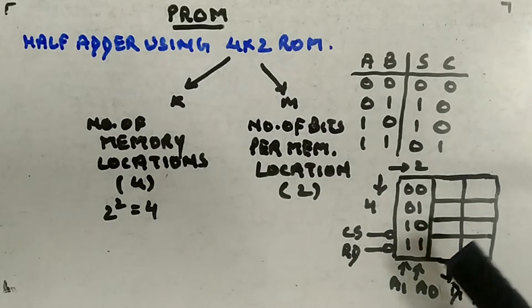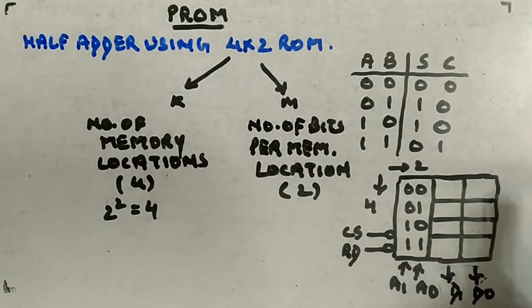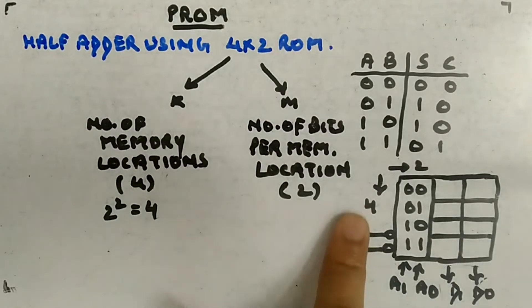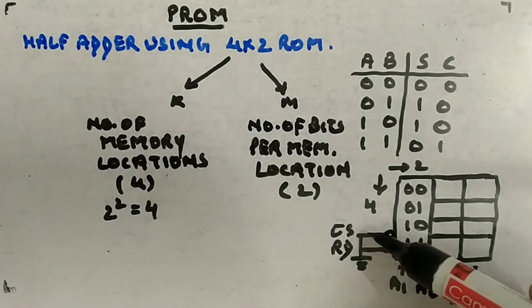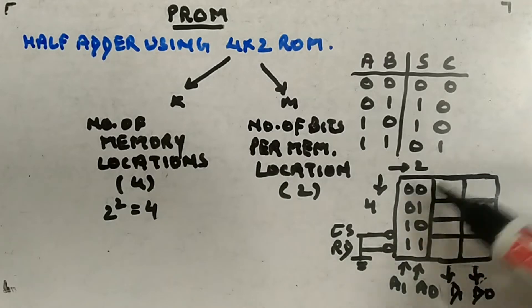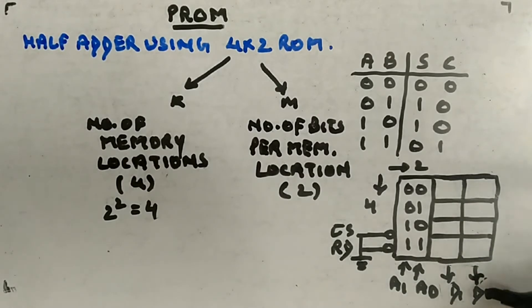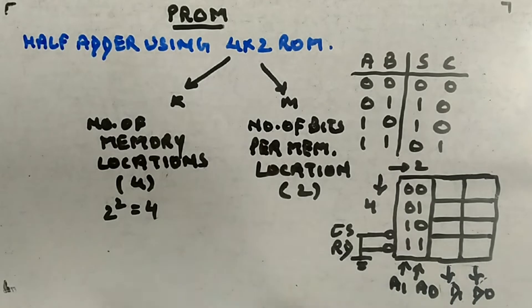Whenever you want to use it, you provide 0 to chip select. Similarly, if you want to read data from it, you provide 0 to the read line. Both must be zero, so you can connect them to ground. If you want to read from one column you use D1, and from the other column you use D0. These are input pins and output pins. Four rows and two columns gives you a 4×2 ROM.